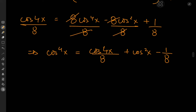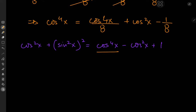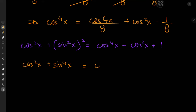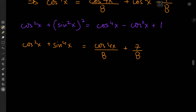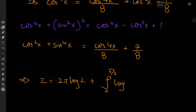Recalling that our expression was cos⁴x minus cos²x plus 1, the cos²x terms cancel conveniently, leaving cos(4x)/8 plus 7/8. Returning to the integration problem, I equals 2π log 2 plus the integral from 0 to π/2 of the logarithm of (1/8)cos(4x) plus 7, dx. Using properties of the logarithm we can factor out the 1/8, giving log(1/8) times π/2 plus the integral from 0 to π/2 of log(7 plus cos4x) dx.